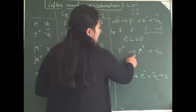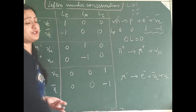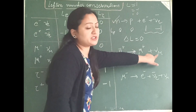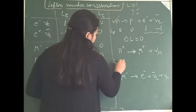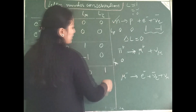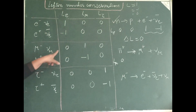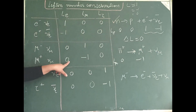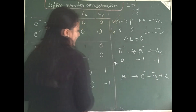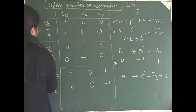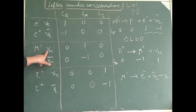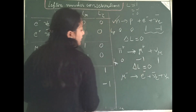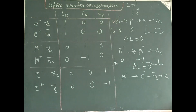Now let us look into the other example where a pi plus decays into mu plus and muon neutrino. That means we should be looking at L mu, the muon lepton number. For pi, it is not a lepton, hence 0. For mu plus, L mu is minus 1, hence minus 1 here. For the muon neutrino, it is 1. So this side it is 0 and this side also it is 0, meaning delta L mu is conserved.